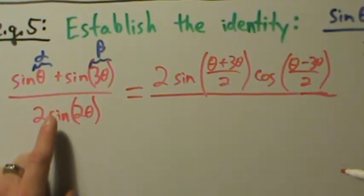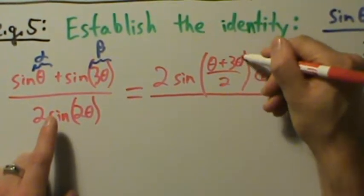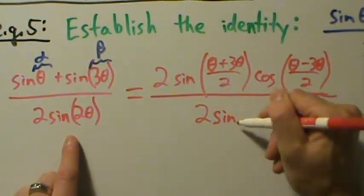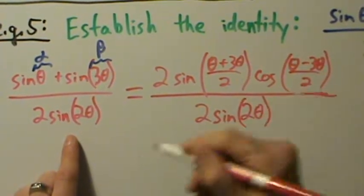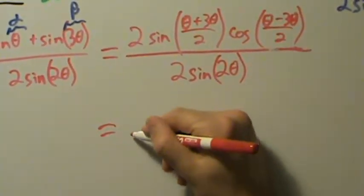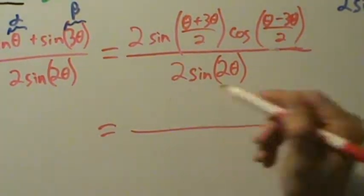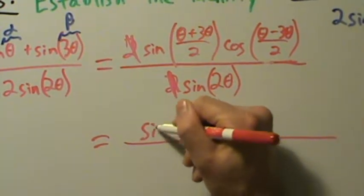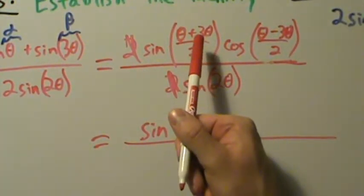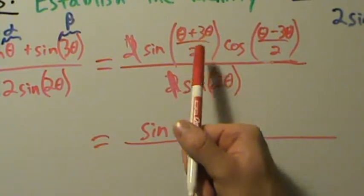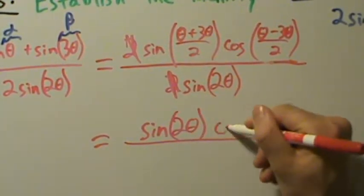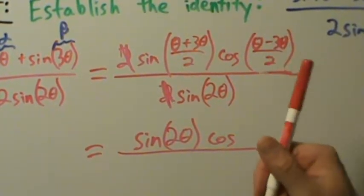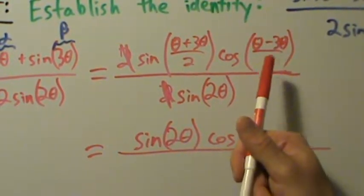Now let's simplify. The two on the top cancels with the two on the bottom. For the sine argument: theta plus three theta is four theta, and four theta divided by two is two theta. For the cosine argument: theta minus three theta is negative two theta, and negative two theta divided by two is negative theta.